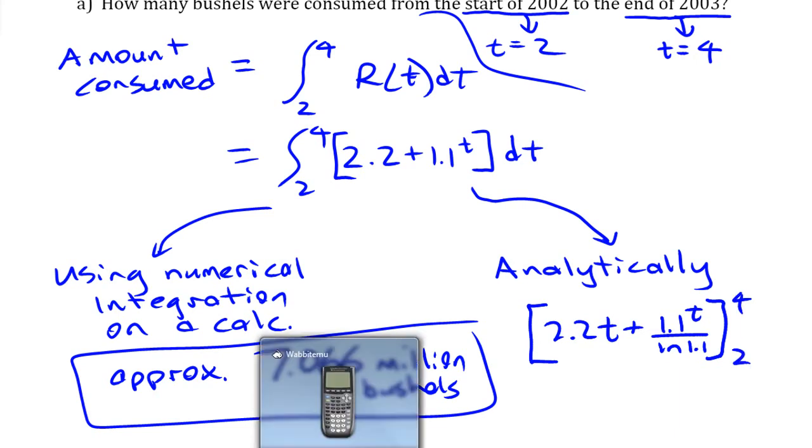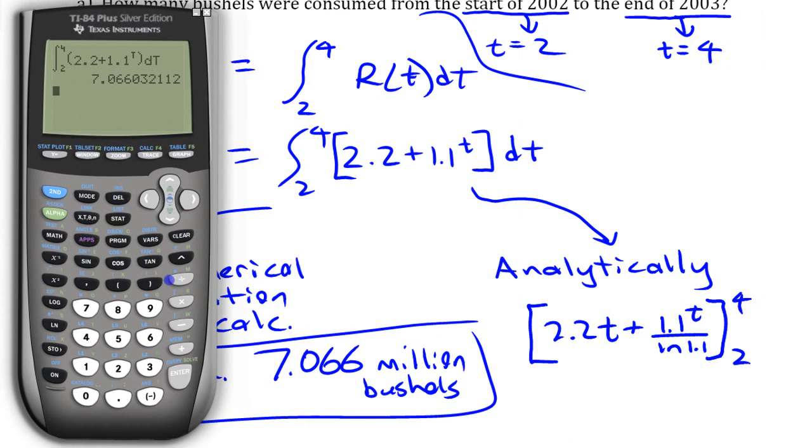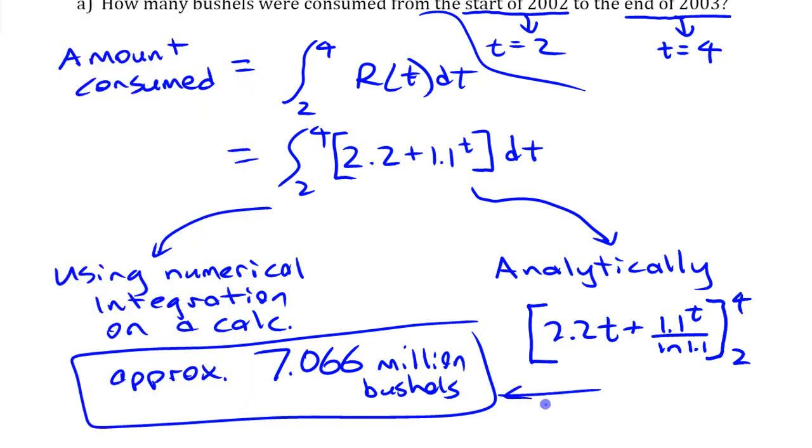This would be a bit tedious to put in the calculator, but we can try it nonetheless just to confirm. We want 2.2 times 4, plus 1.1 to the power of 4 divided by ln(1.1), and then minus the other part here. We get that same value, so either way you're going to get that answer.